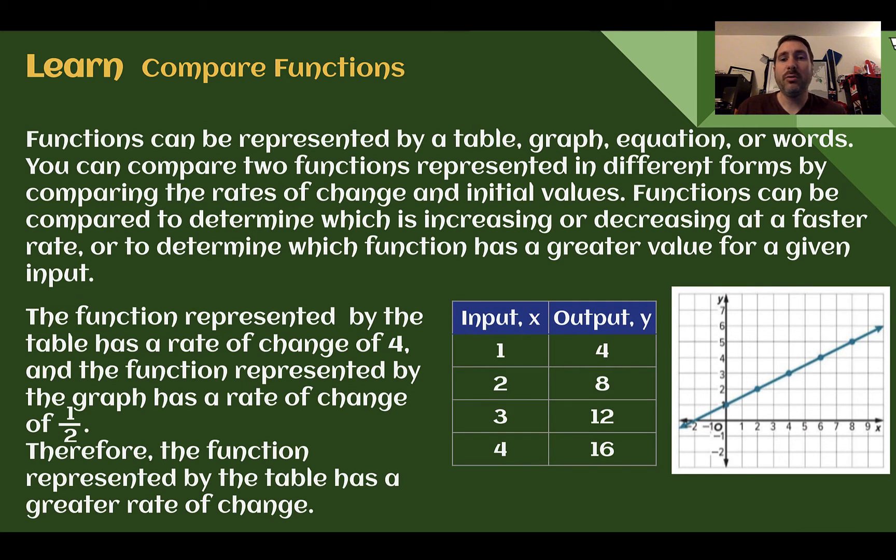Here we have two functions given, one in a table and one in a graph. The function in the table has a rate of change of 4. We can see that it continues to go up 4 for each one more on the input, so this has a rate of change of 4.